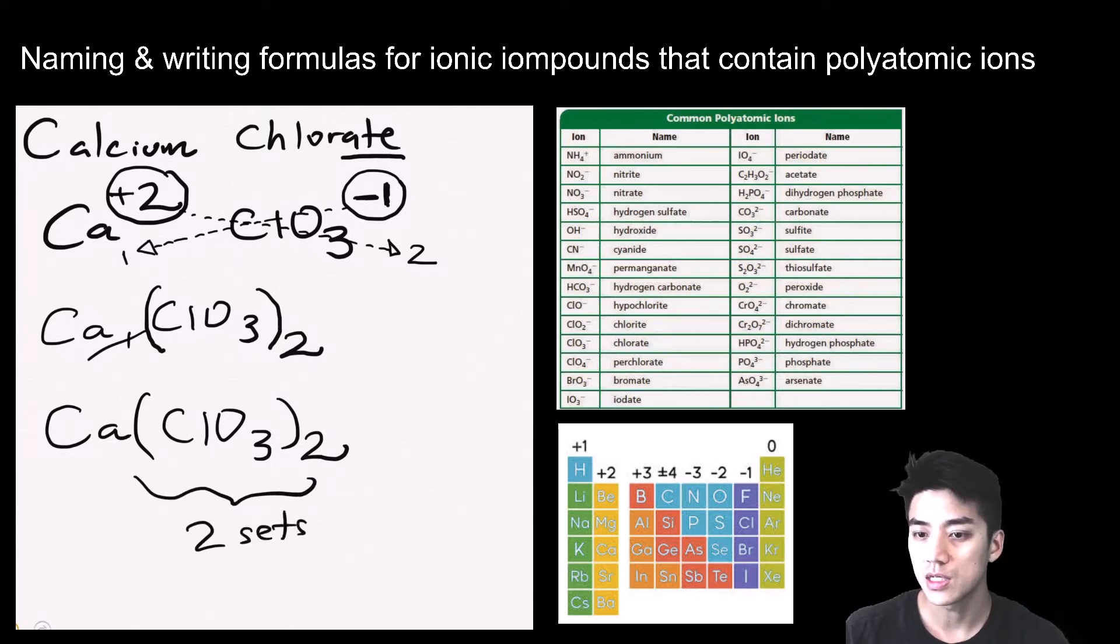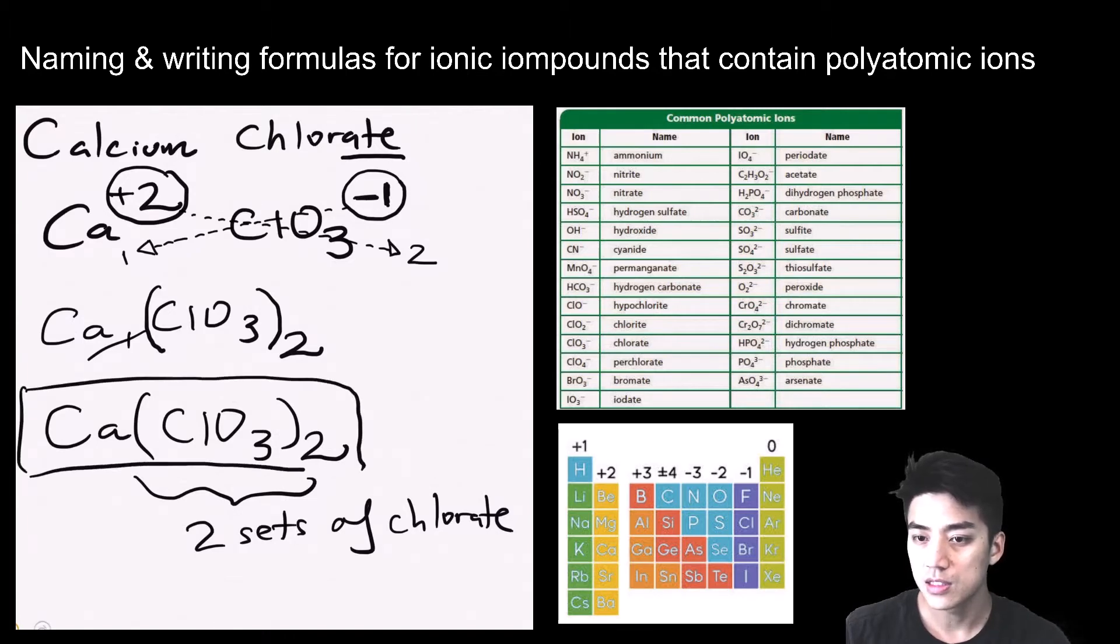In the language of chemistry, that parentheses 2 means two sets of chlorate. So you've got Ca(ClO3)2. You can think of it like this - that 2 on the outside can actually distribute, so you've got 2 chlorines and 6 oxygens. But don't write it like that. Leave it in the form Ca(ClO3)2.